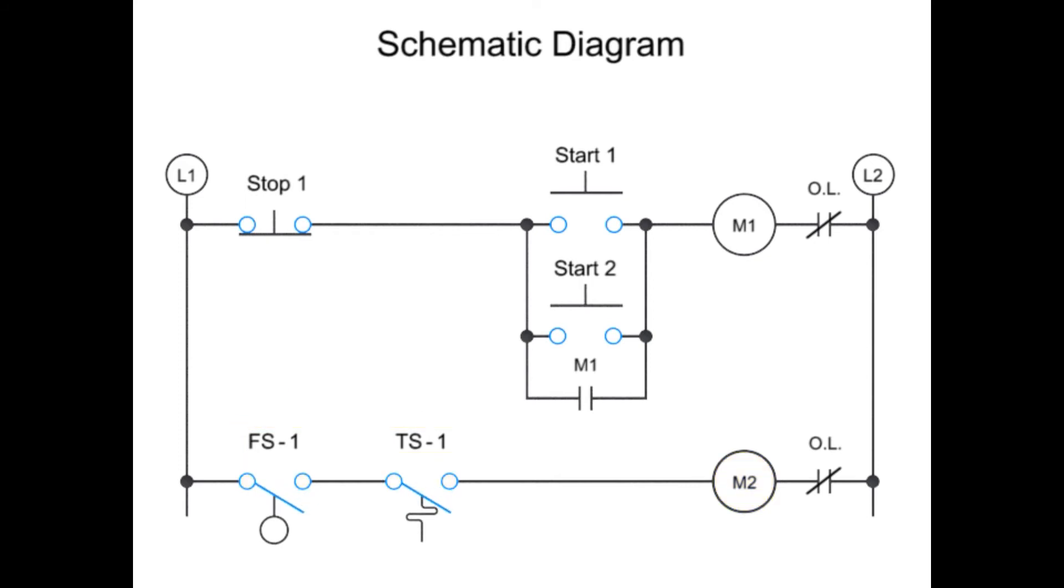Next, let's consider OR logic. This can occur when there are two normally open control functions connected in a parallel arrangement, represented here by two start push buttons. Thus, motor coil M1 can be energized by manually pressing start switch 1 or start switch 2.